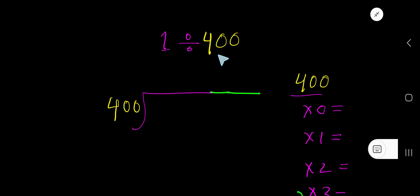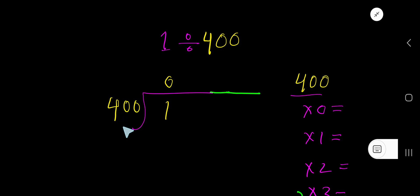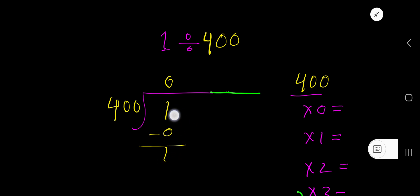1 divided by 400. 400 goes into 1 how many times? 0 times, since 1 is less than 400. 0 times 400 gives me 0. If you subtract, you get 1. To continue this process, place a decimal here and you can take any number of zeros.